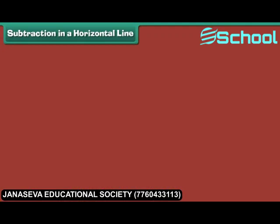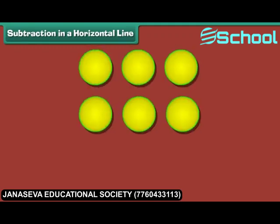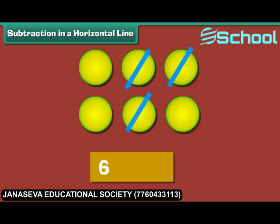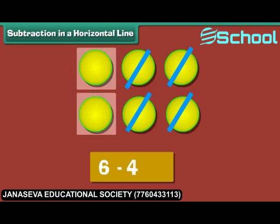Subtraction in a horizontal line. Let us now use dots to subtract numbers horizontally. To subtract four from six, we place six dots. Strike off four dots. Two dots remain. Therefore, two is the answer.